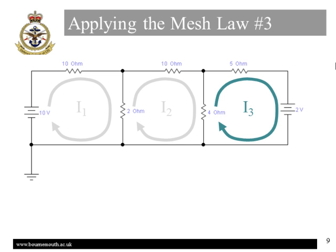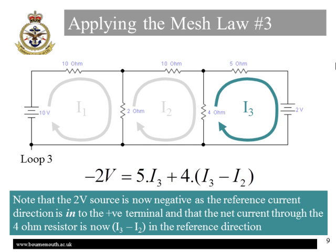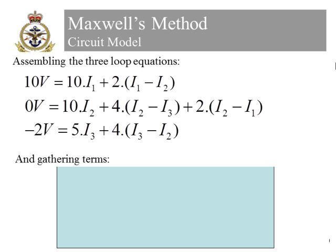Finally, on to the third loop. This time, the source has our reference current going into the positive terminal, and therefore appears as minus 2 volts. The current through the 4 Ohm resistor is now I3 minus I2. These, then, are the three simultaneous equations we need to solve. And as required, we have three independent equations in three unknowns.